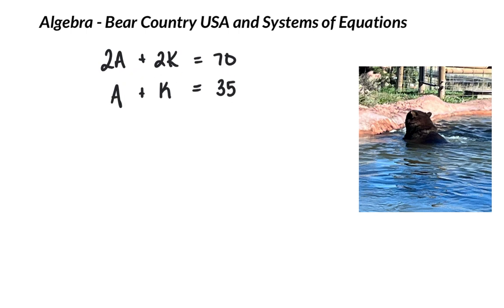So then I said, well, what if the car after us instead had two adults and three kids, and it costs 85? And that's when they said, okay, now we know that one additional kid costs an additional 15. So one kid is 15, which makes the adult have to be 20.